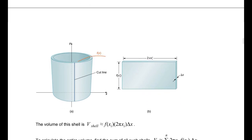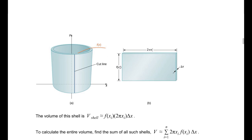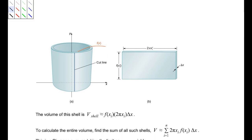The delta x is the thickness of that slice. 2 pi x — that is because this is a circle, it's a cylinder. The height of that prism is the height of the function. So the volume of that shell is going to be approximately f of xi — the height — times the length 2 pi xi, and delta x is our thickness.